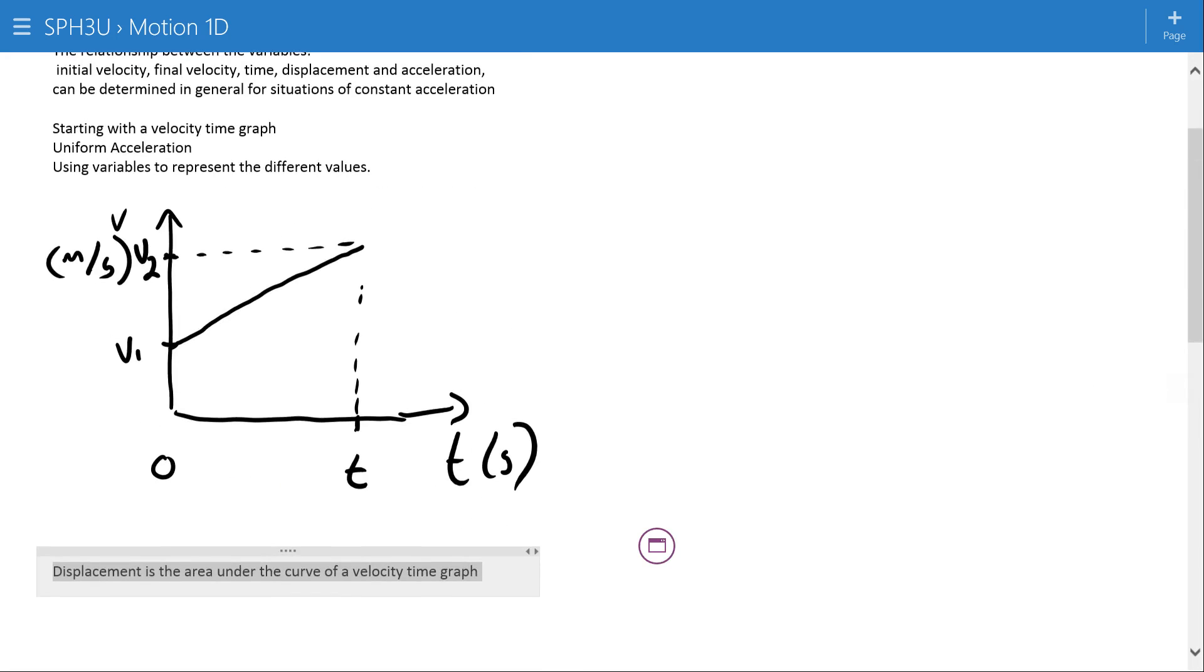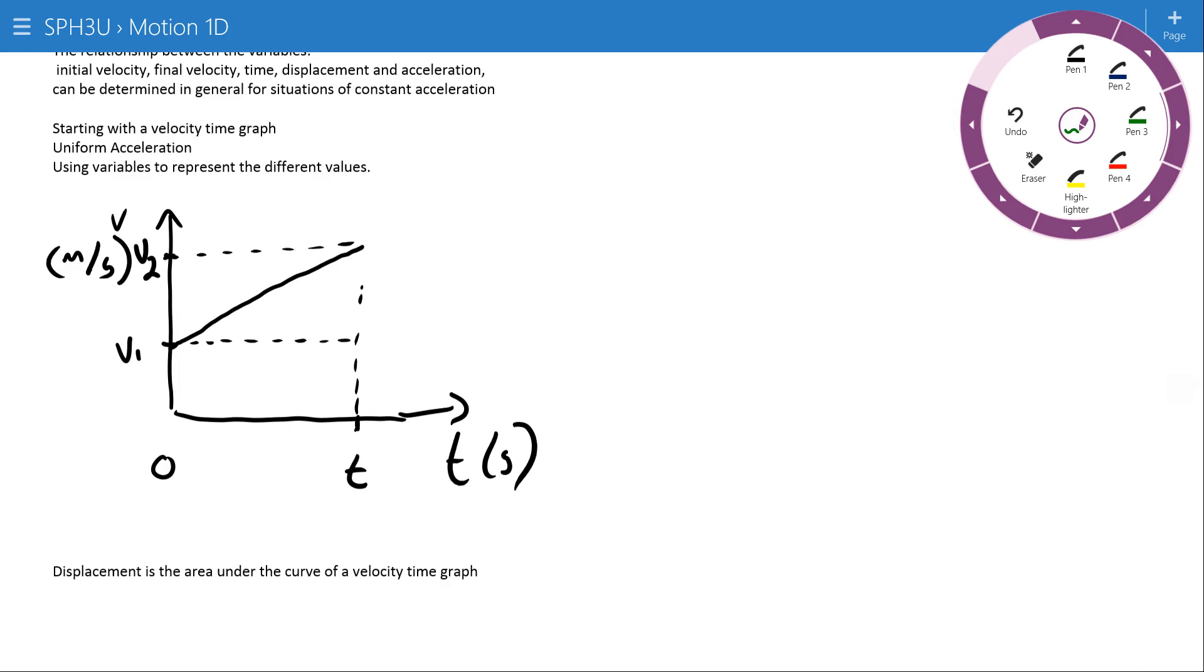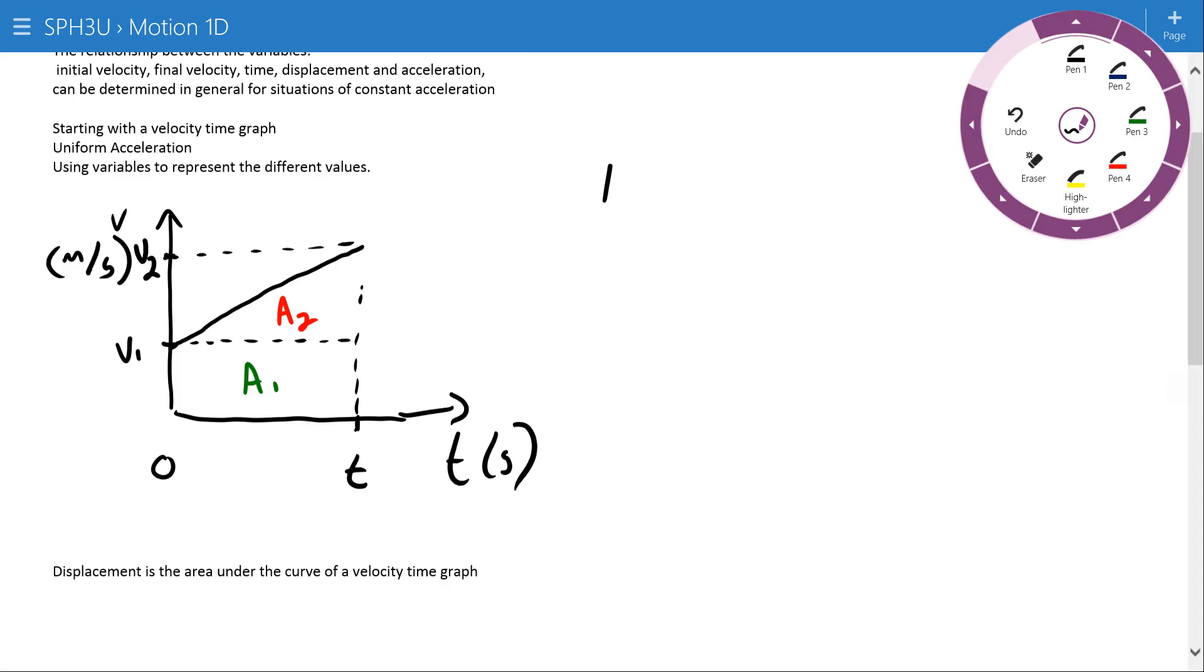For our second of the five equations of motion, we'll recognize that displacement is the area under the curve of this velocity time graph. To do this, I'm going to divide this into two regions.